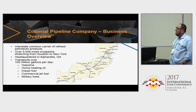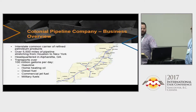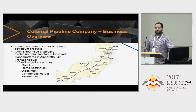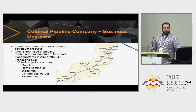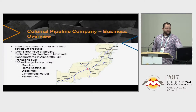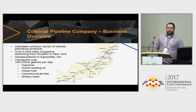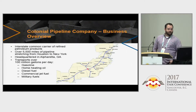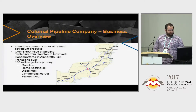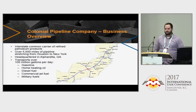Quick overview of Colonial and what we do. We're an interstate common carrier of petroleum products. We have over 5,500 miles of linear assets stretching from Houston to New York Harbor, headquartered in Alpharetta, Georgia. And we transport over 100 million gallons of refined petroleum products every day.